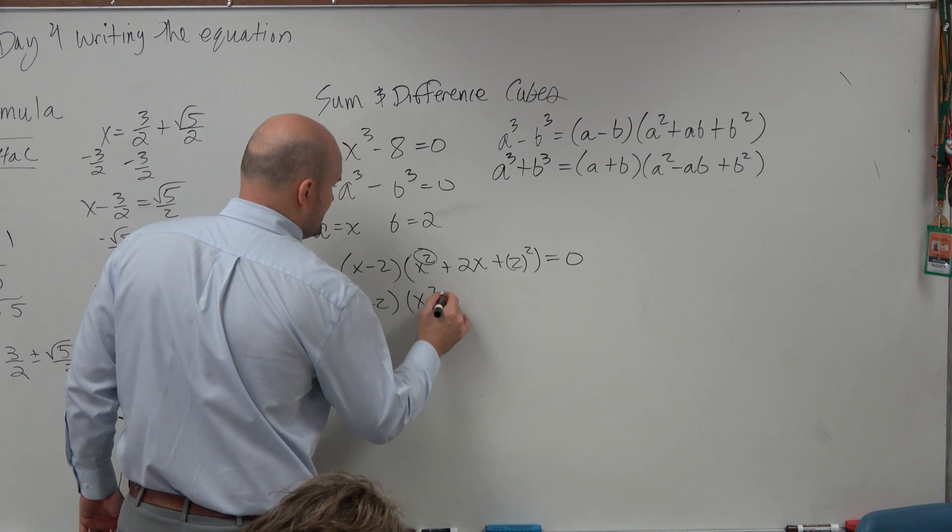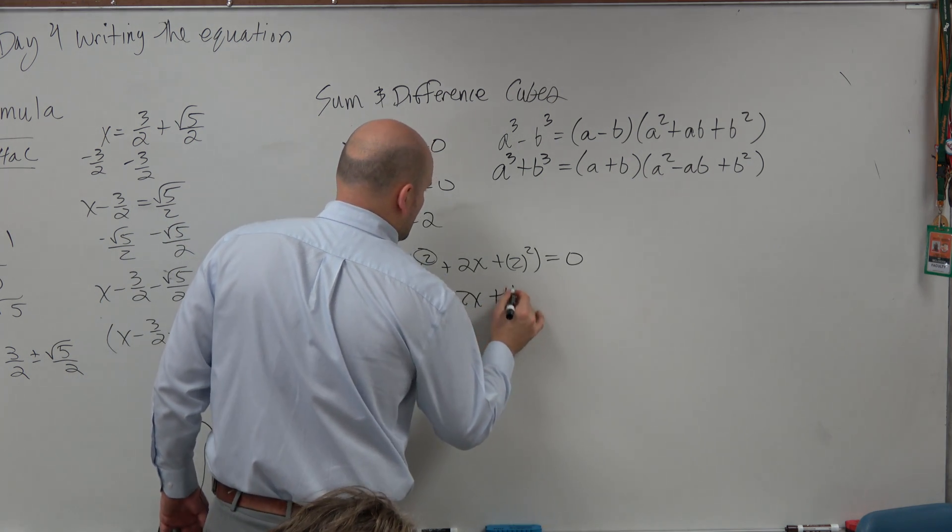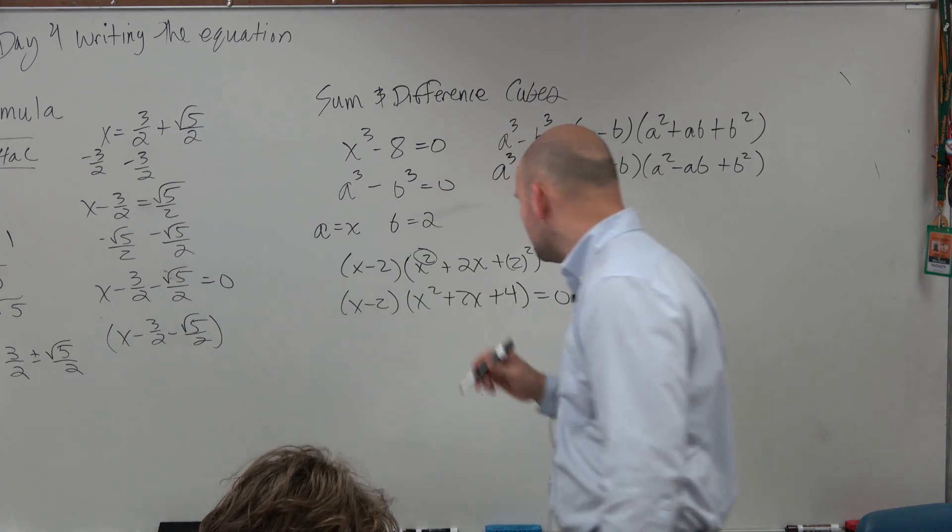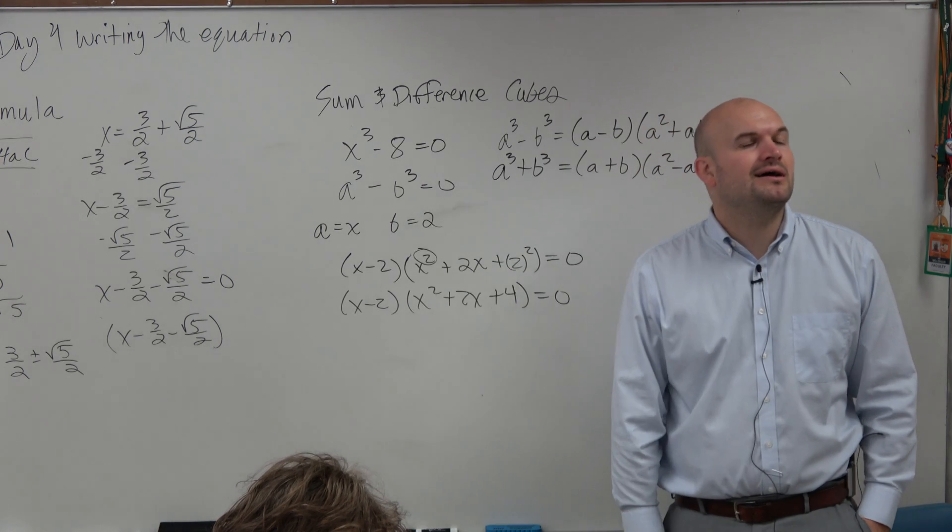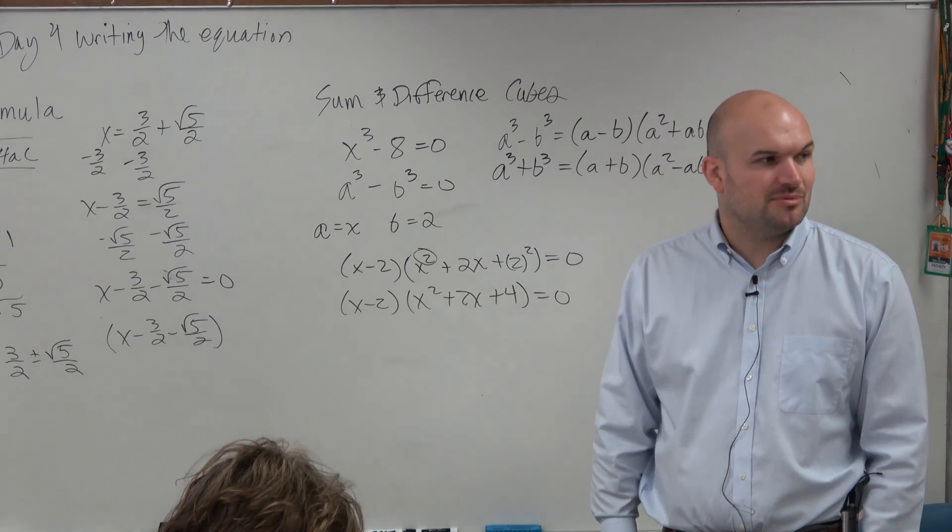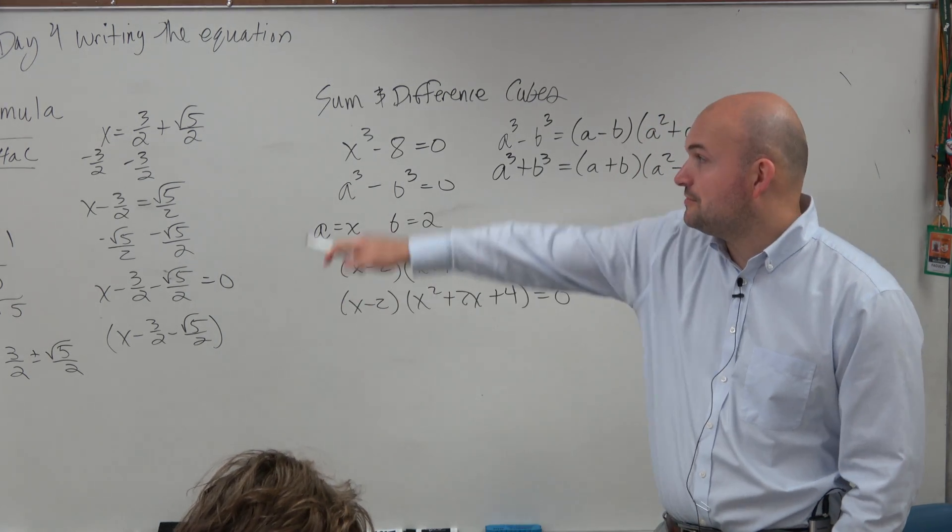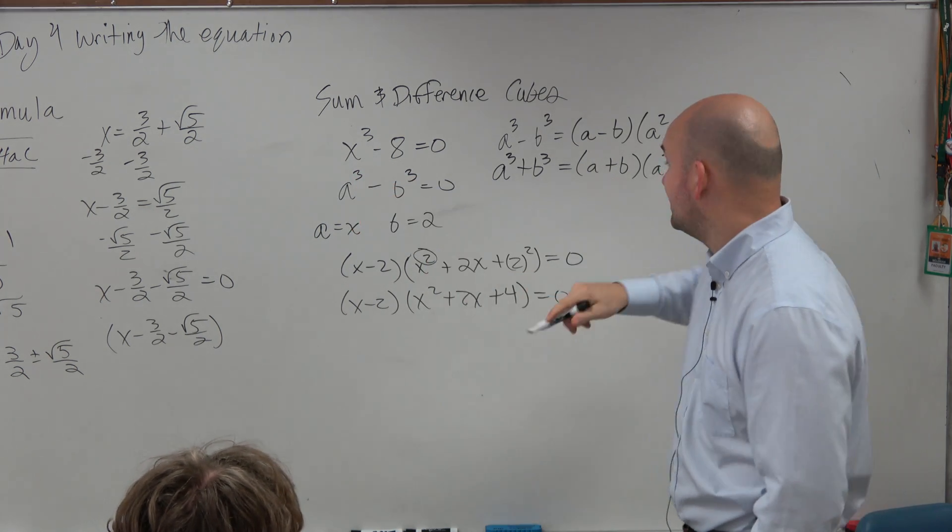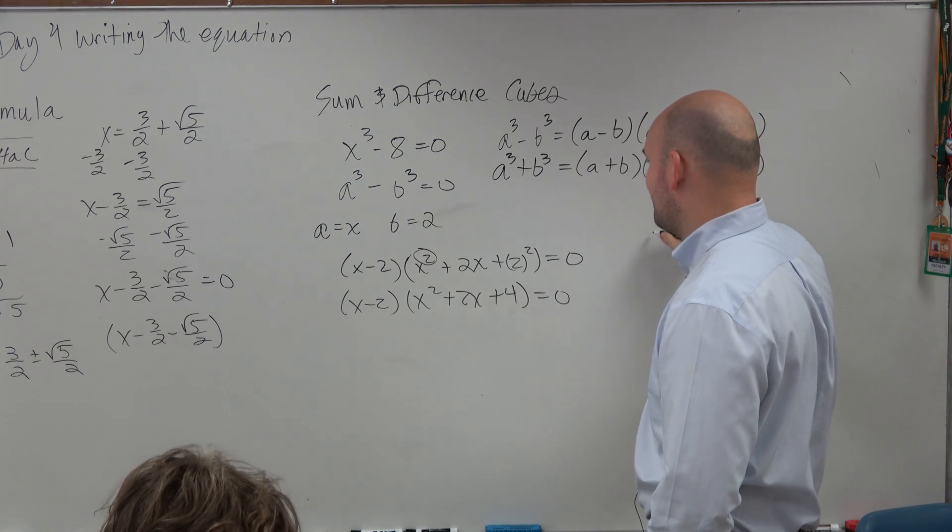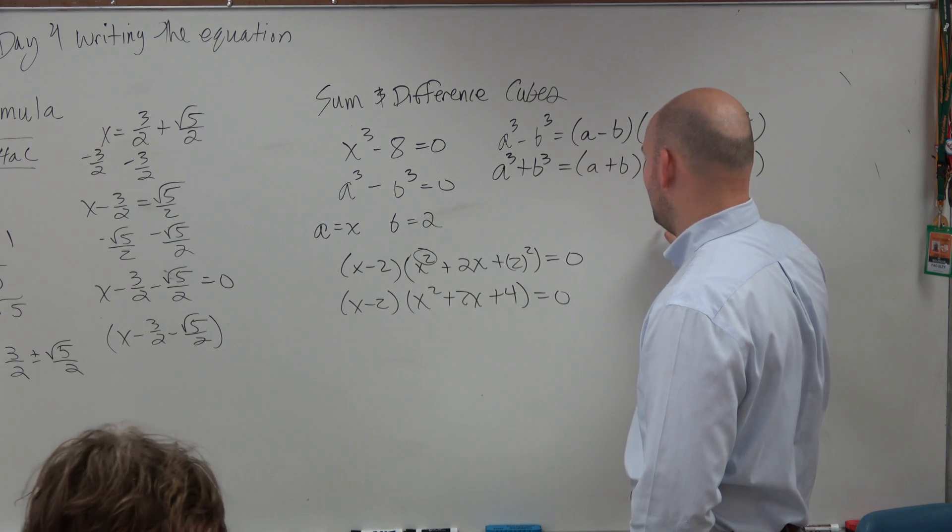So we go ahead and simplify it. And we say, all right, what two numbers multiply to give you 4, add to give me 2? It's not factorable, is it? So therefore, we have to go back to our quadratic formula. I know, it's a bore of a question, but it's a really good one. Hint, hint, wink, wink.